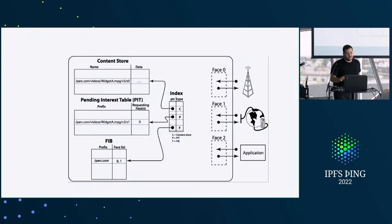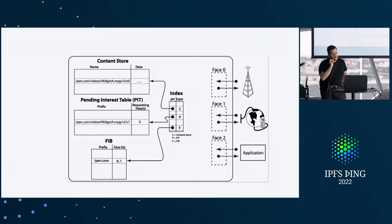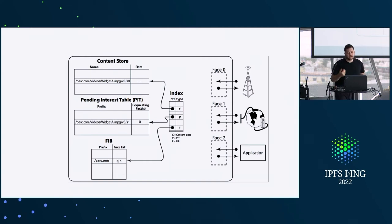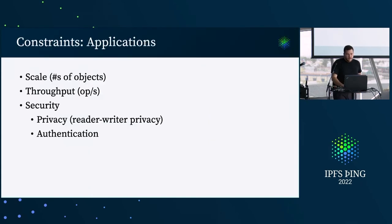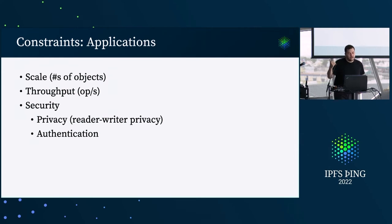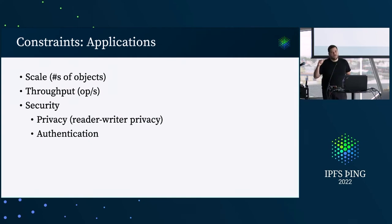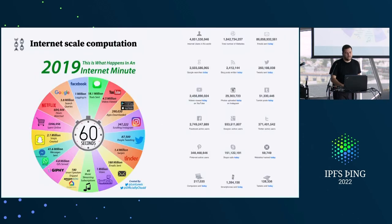There are tons of protocols designed in the style of location-oriented routing, and many implementations exist for a lot of these systems. We can leverage a lot of knowledge from these systems. There are also a ton of different constraints that will come from applications, mostly in terms of scale and throughput, and in terms of the security context — what kind of privacy requirements? Do they need reader/writer privacy? Do they need authentication in terms of being able to find out who needs what?